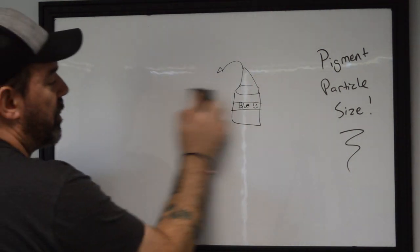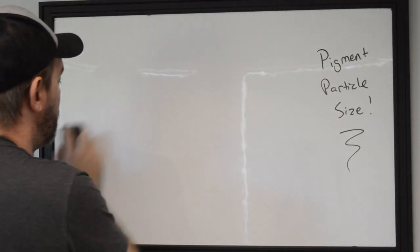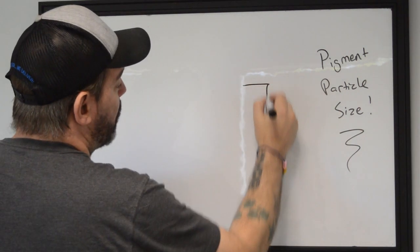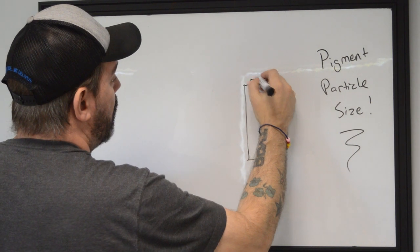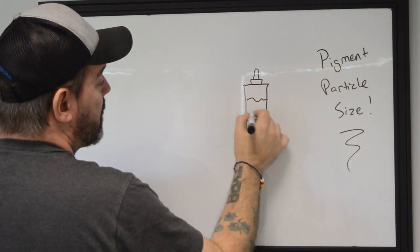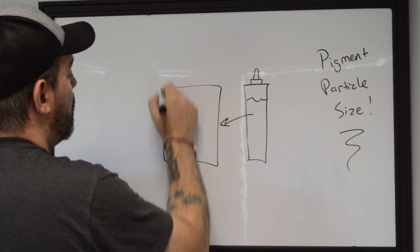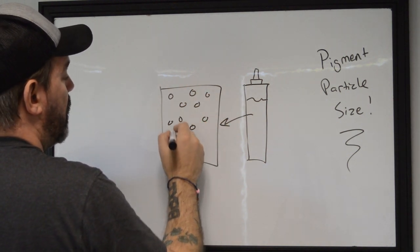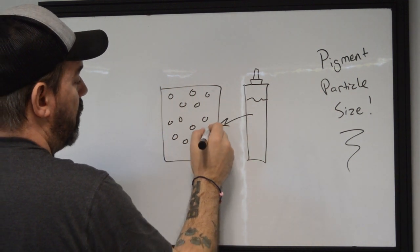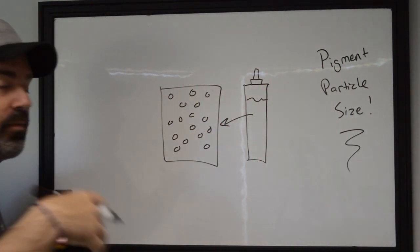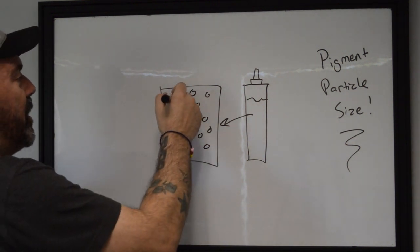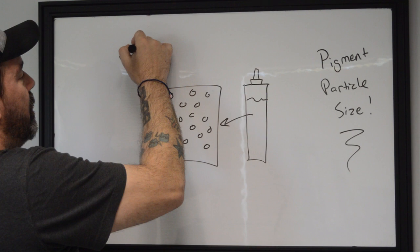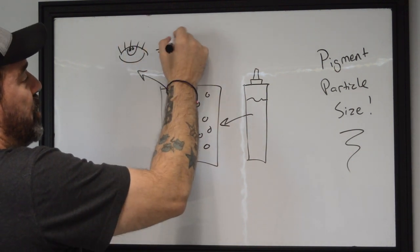But when we start actually taking that bottle of pigment and we blow it up, what we actually see is the pigment in there is just an aggregation of a whole bunch of little particles that interact with energy, reflect or refract light that end up outputting what our eyes see as blue.